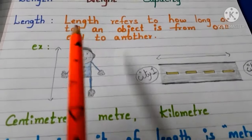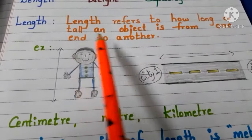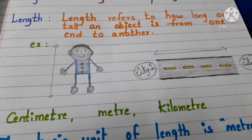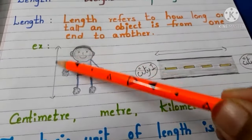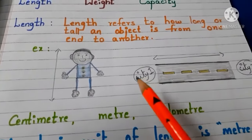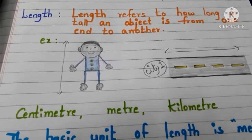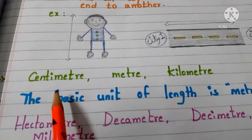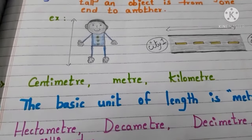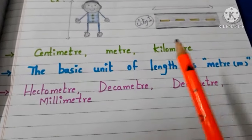First, the definition of length. What is length? Length refers to how long or tall an object is from one end to another. For example: what is the height of a boy, and what is the distance between two cities?